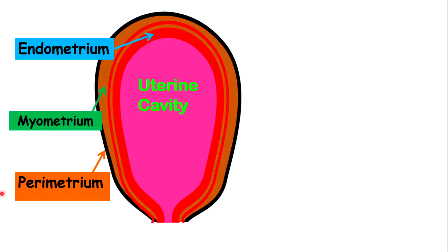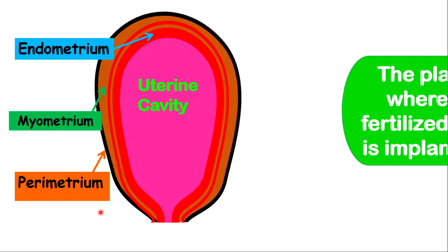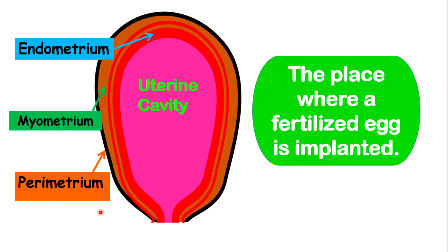The perimetrium, notice the word peri as in perimeter, so it is the outermost layer or wall of the uterus. The perimetrium is important because it secretes a lubricating fluid. This lubricating fluid is important in reducing friction between the uterus and the pelvic area. The uterus is the place where fertilized egg is being implanted. As mentioned, implantation takes place in the endometrium, the innermost wall.